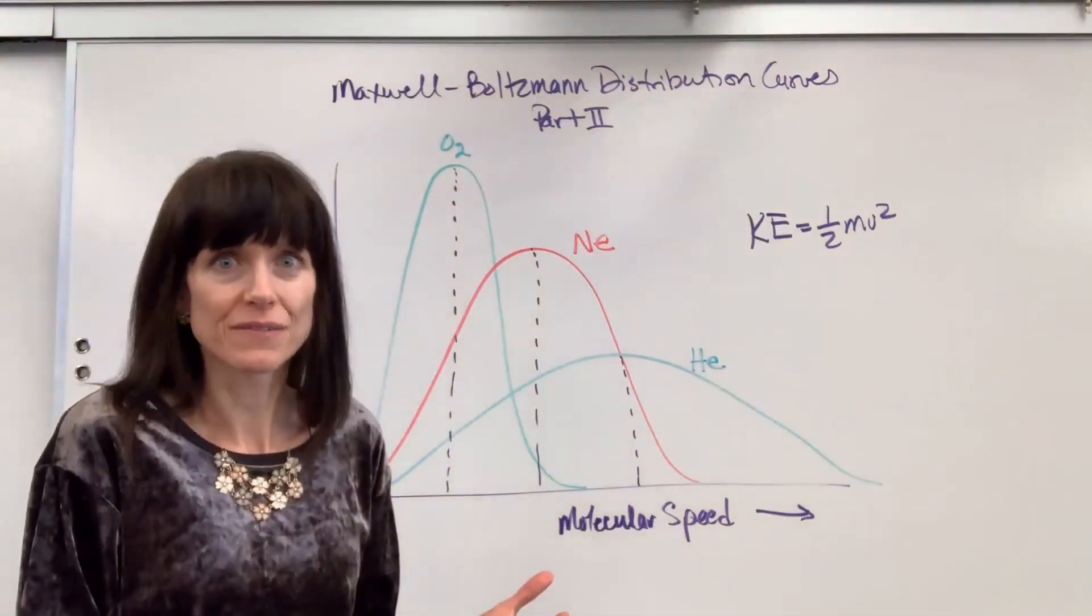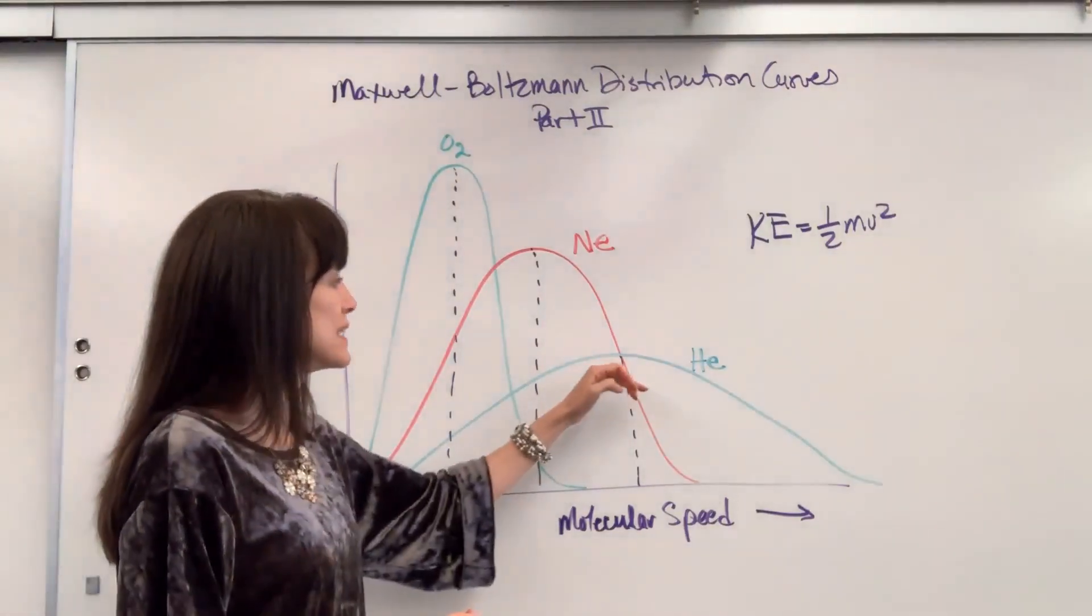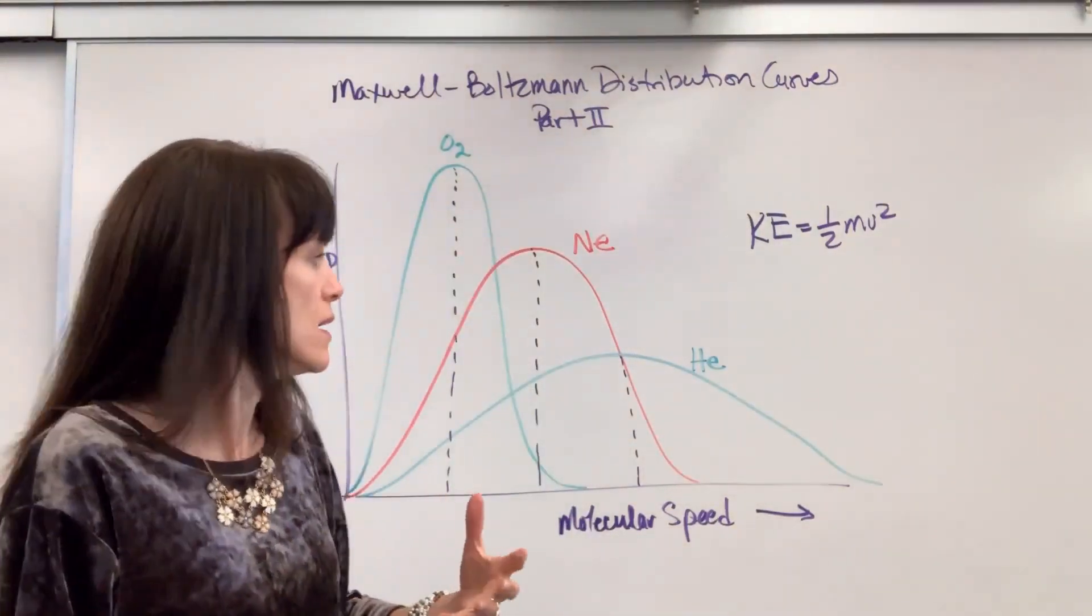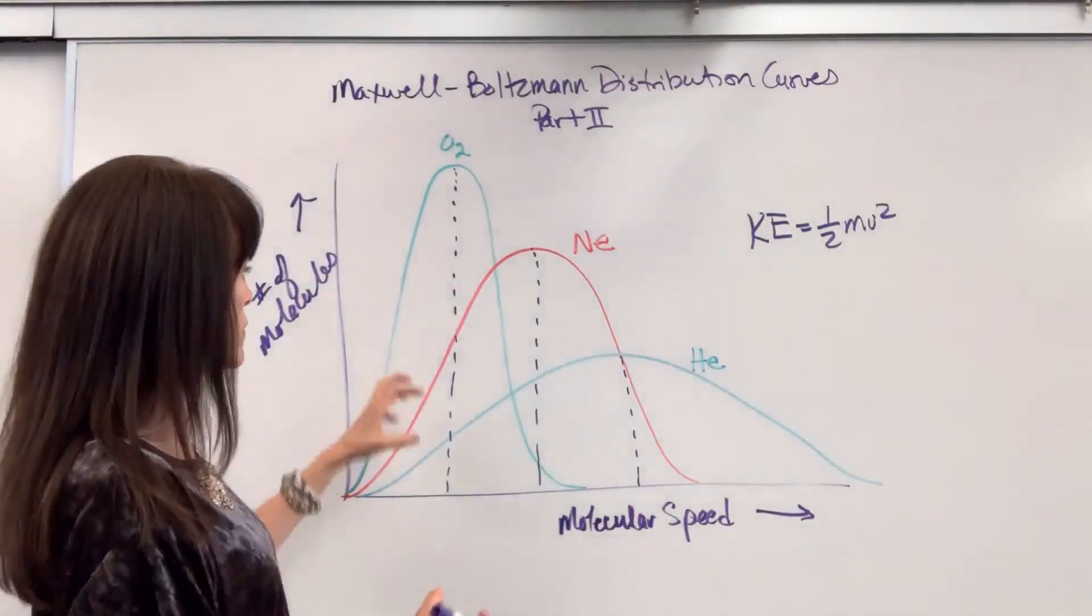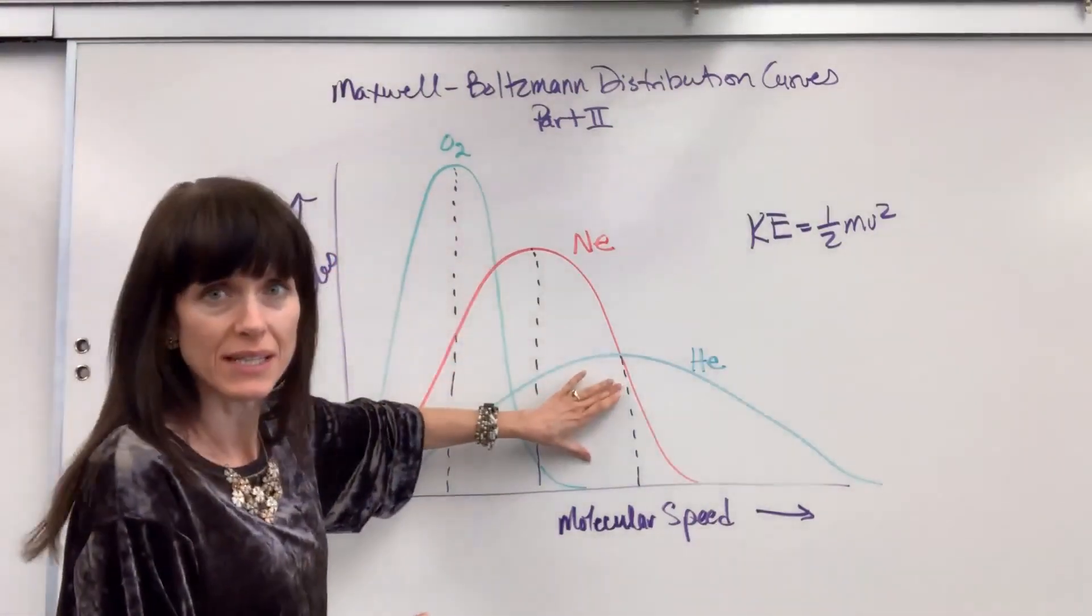Now here's what's tricky for students: they look at this and wonder how is it that helium has a higher speed, a faster speed, but look at that curve, how low that curve is, all the way down here. And remember, you have the same number of atoms in the O2 as you do in the helium.